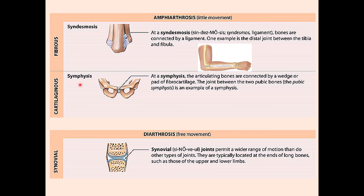The second type of amphiarthrosis is symphysis, made of fibrocartilage. A key example is the pubic symphysis between the two pubic bones. Near labor, this joint softens and can stretch slightly to allow the fetus to pass through the birth canal. Another example is the intervertebral discs between vertebral bodies, which provide flexibility to the vertebral column while maintaining its strength.